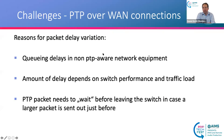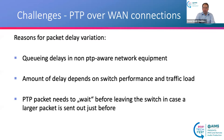What are the reasons for packet delay variation? The first reason is queuing delays in non-PTP-aware network equipment. If you do not use boundary or transparent clocks, then those delays are not deterministic and not constant. Non-PTP-aware network equipment will have different delays when PTP packets pass through.